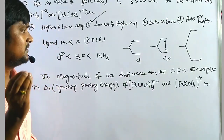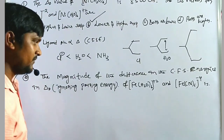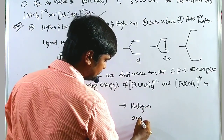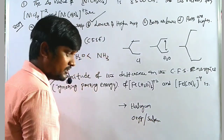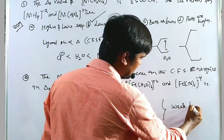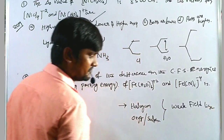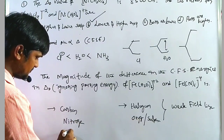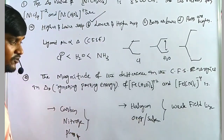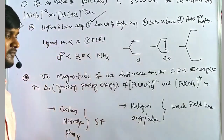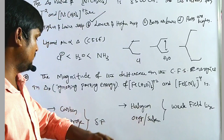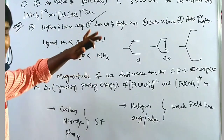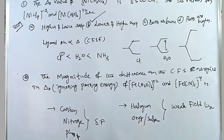Before going to the second problem, here is a small hint about the spectrochemical series. Whenever the donor atoms are halogens, oxygen, or sulfur, those ligands are weak field ligands. But whenever the donor atoms are carbon, nitrogen, or phosphorus, those are called strong field ligands. Generally water and ammonia fall in the middle of the spectrochemical series.